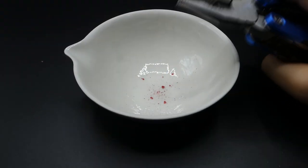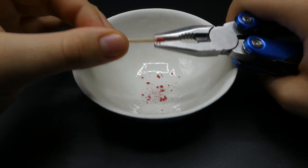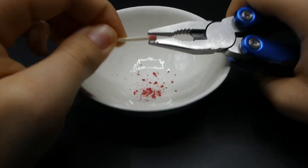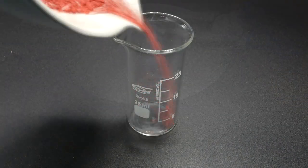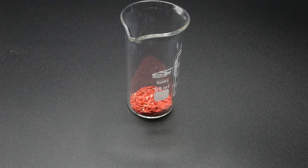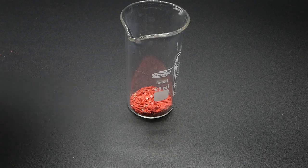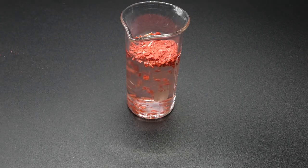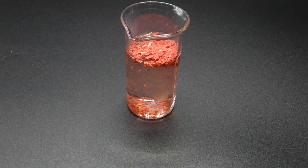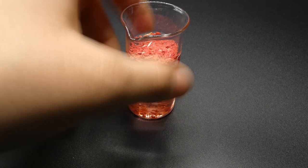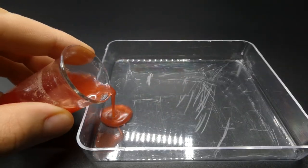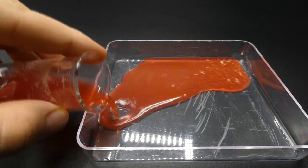If you really want to play with it, you can extract it from a match. To do that, you need to scrape the match head material and soak it in some warm water. Then wait a little and pour the water out without the undissolved stuff and dry it.